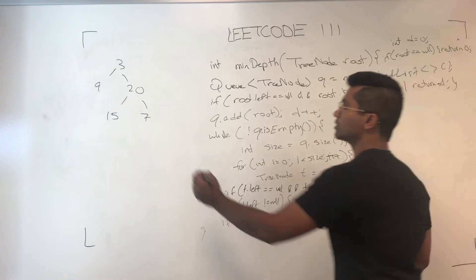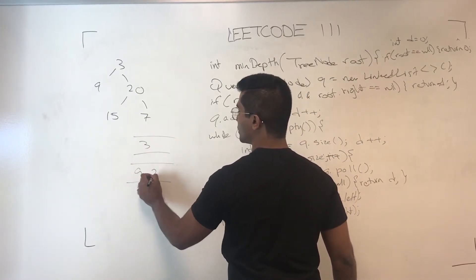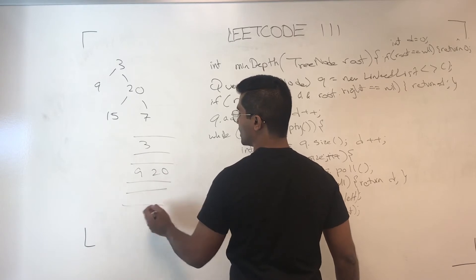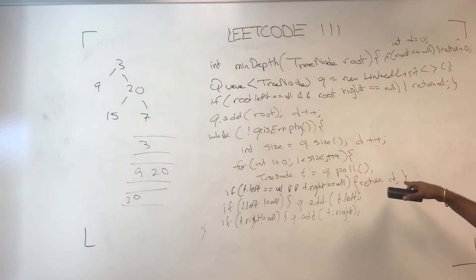Now 3, now 9, so initially the Q is like this, we got 3 in there. 3 is popped out, adds 9 and 20 in there, and then 9 gets popped out. 9's left and right is null, so we return d.